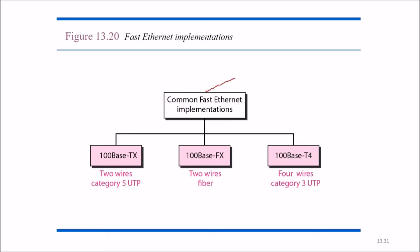And the common fast Ethernet implementations were 100BaseTX, 100BaseFX, and 100BaseT4. So here we have two wires, category 5 wires, category 5 UTPs. These are F, that is two wires, fiber wires. And here we have four wires, UTP, unshielded twisted pair, category 3.